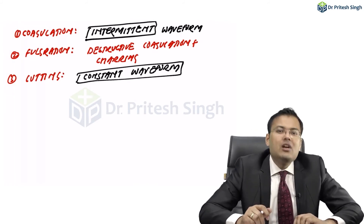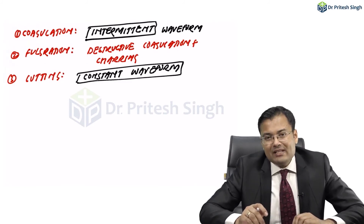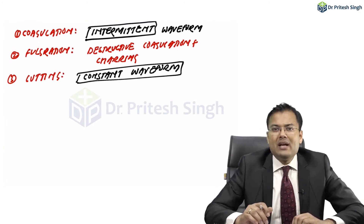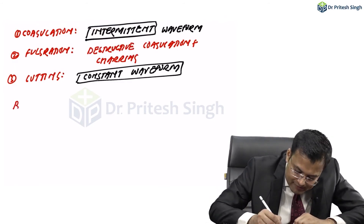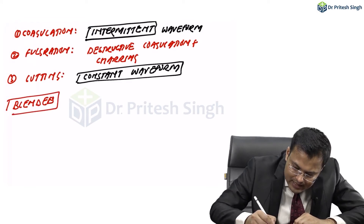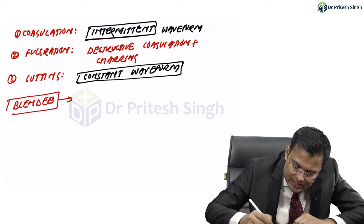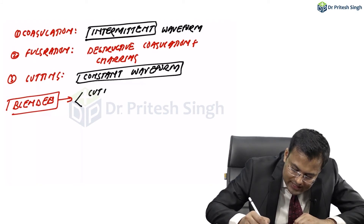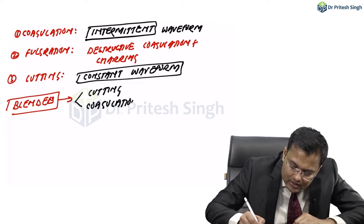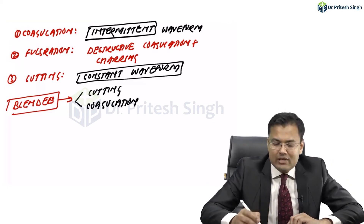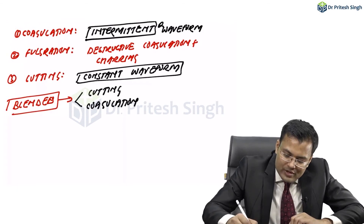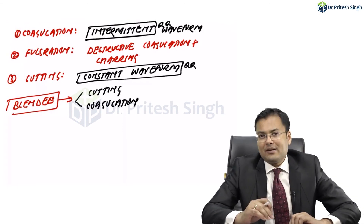For coagulation, the cautery is activated with an intermittent waveform. There is also a blended waveform, which has the advantage of both cutting and coagulation. These are the two questions which are frequently asked about diathermy.